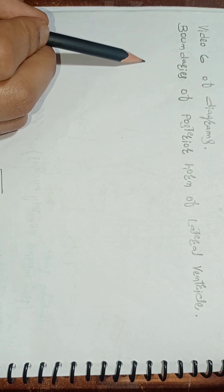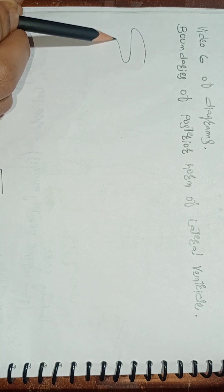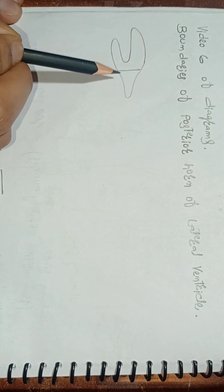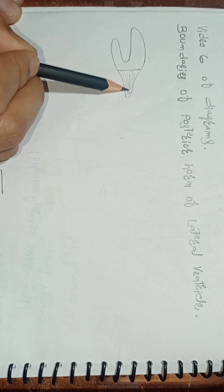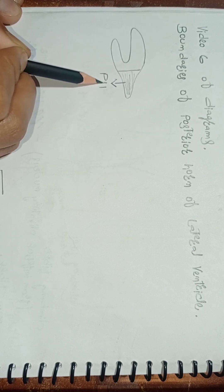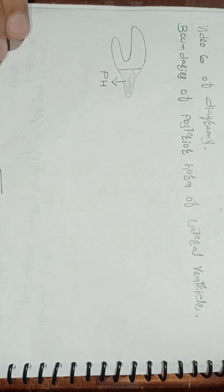From the previous lectures, we know what a lateral ventricle is and what the structure of the lateral ventricle looks like. So this is the lateral ventricle. This part right here — the shaded part — is the posterior horn of the lateral ventricle. Now we'll try to learn the diagram of the boundaries of the posterior horn of the lateral ventricle.